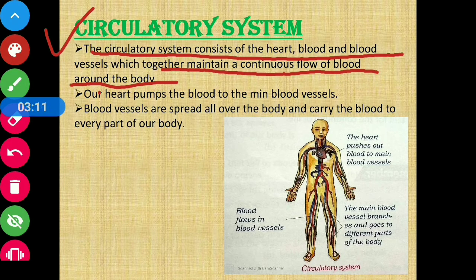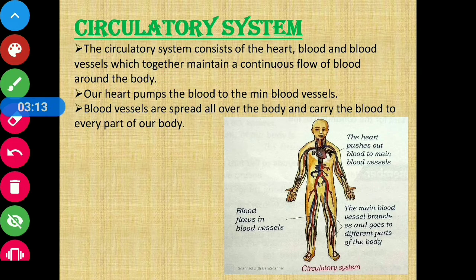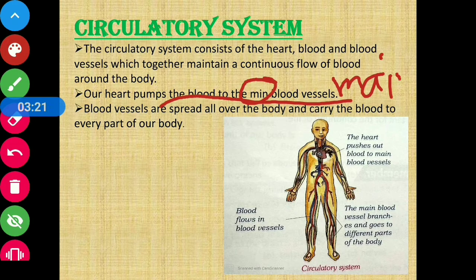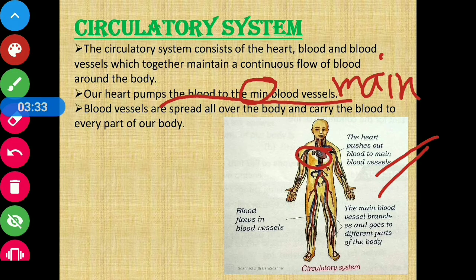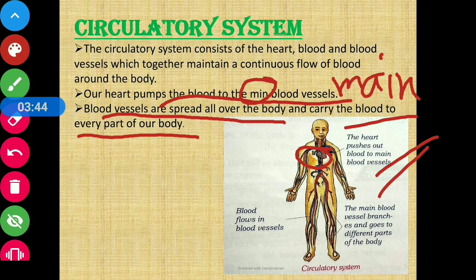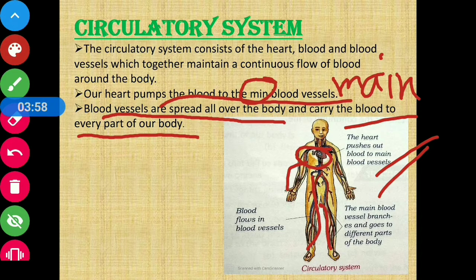Our heart pumps blood to the main blood vessels — you can see this in the picture. The heart pushes out blood to the main blood vessels. These blood vessels are spread all over the body and carry the blood to every part of our body. Blood flows through blood vessels, and the main blood vessels branch out to different parts of the body.